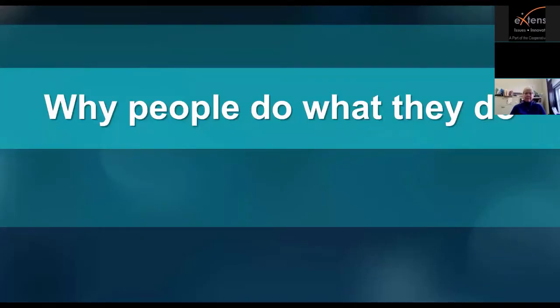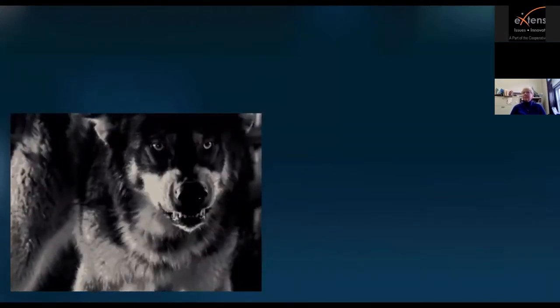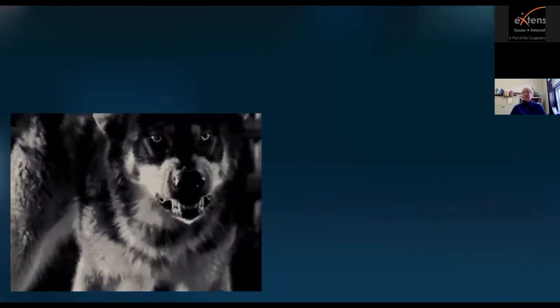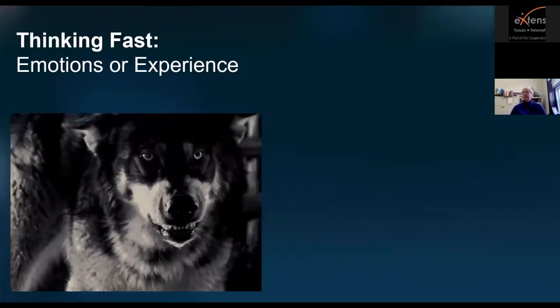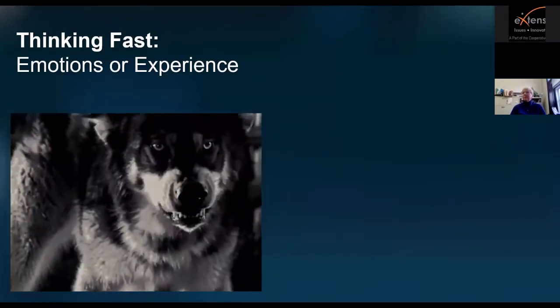I want to talk about why people do things the way that they do — and everything I'm going to describe, you may see some of yourself in this, because we all do this. The first basic way we process information is emotionally, or through our experience. That's a really fast way our mind works — it doesn't take much time or energy. For example, if you saw a threatening dog walking down the street, you'd have an intense reaction and leave immediately. That's referred to as thinking fast, and it accounts for the vast majority of our thoughts.